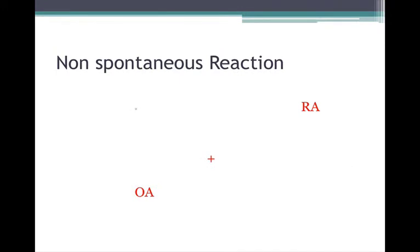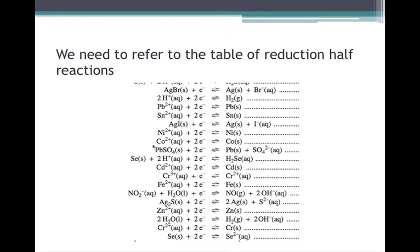Electrolytic cells involve a non-spontaneous reaction, so the reducing agent is going to be above the oxidizing agent on our table of half-reactions. We have to take a look at our table of reduction half-reactions to find out the information we need.